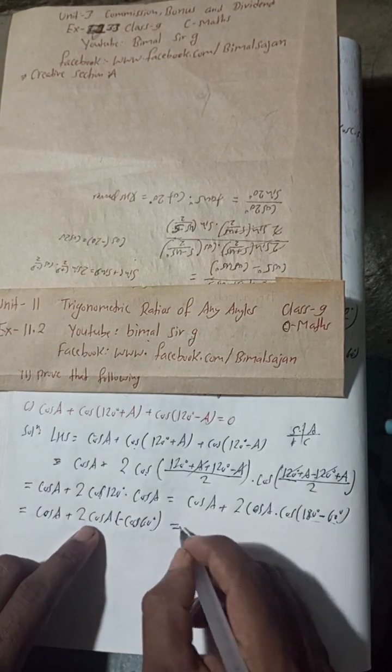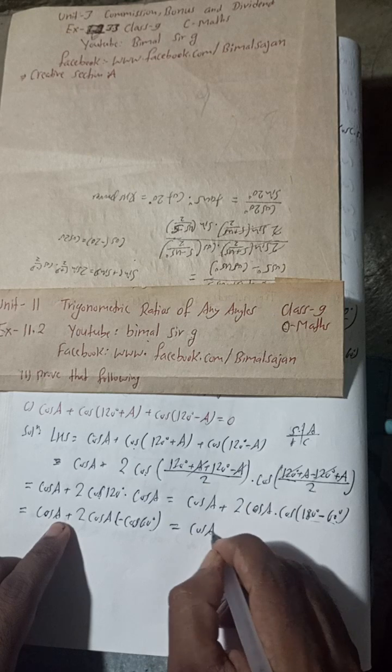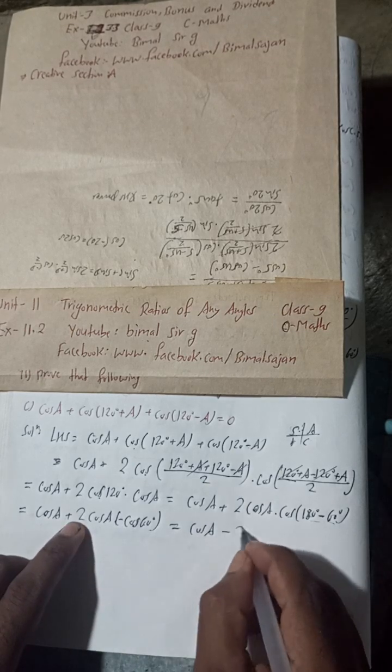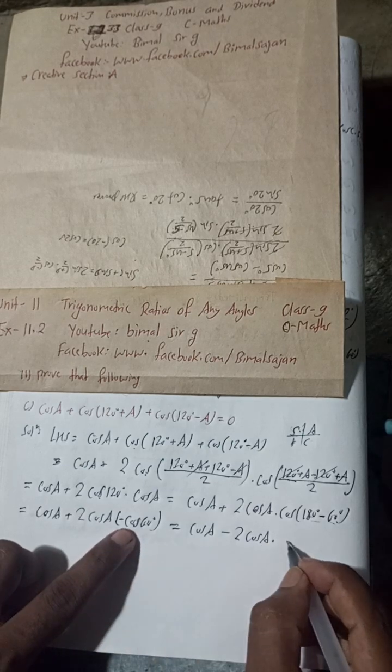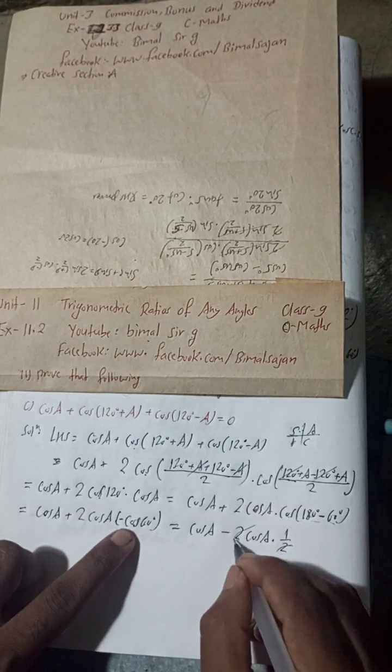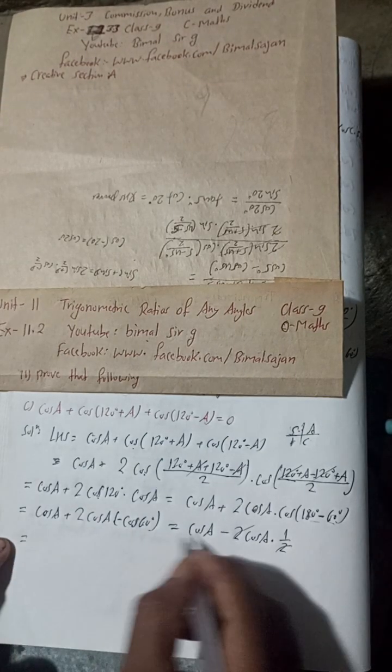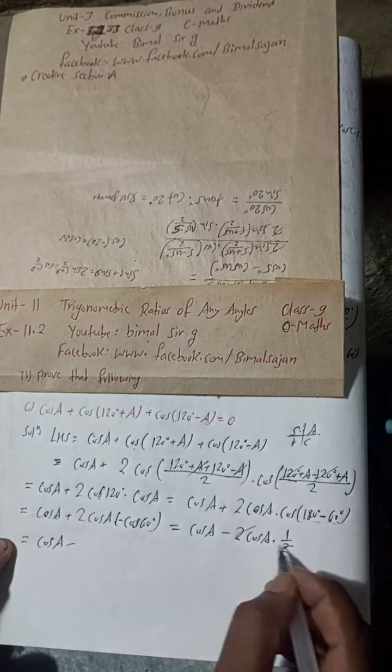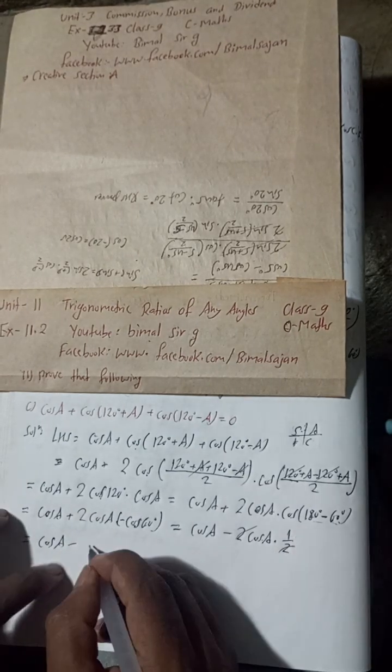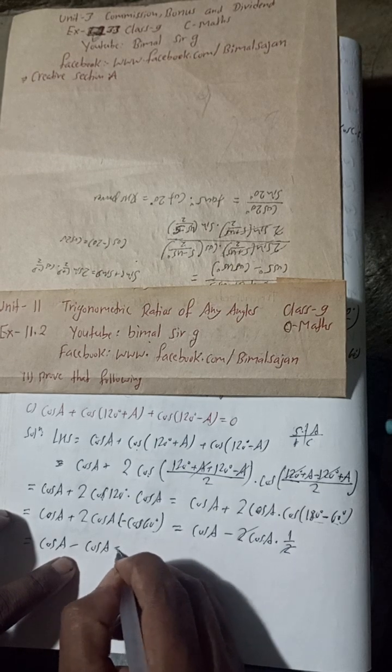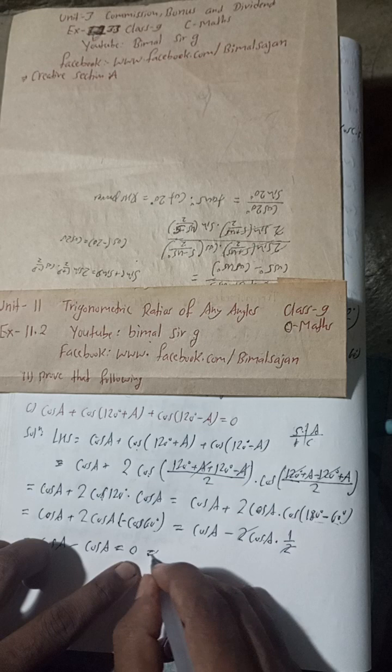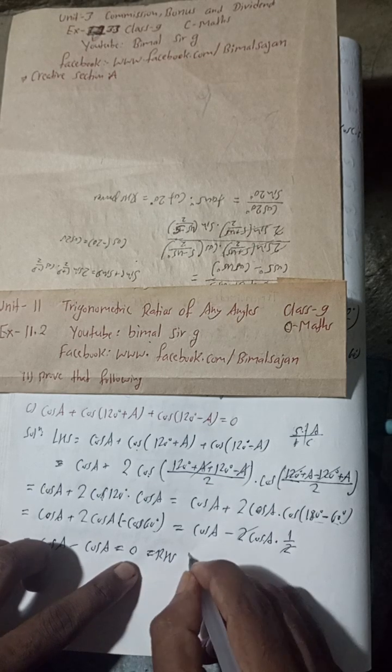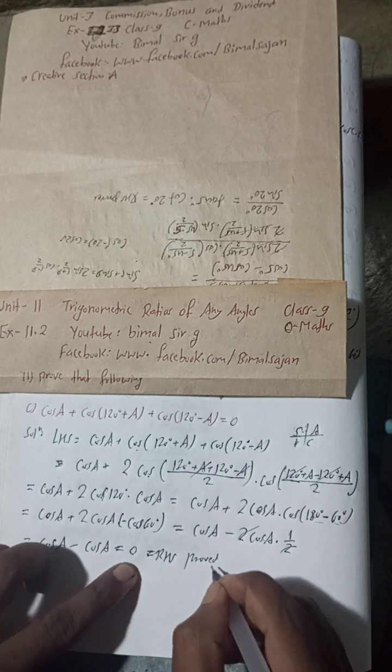Here Cos A as it is. This minus, this plus is minus 2. Cos A as it is. And Cos 60 degree is what? 1 by 2. 2 to cancel. Here is Cos A minus Cos A. Cos A into 1 is Cos A. So Cos A minus Cos A is what? 0. So we got, proved. RHS proved. RHS proved.